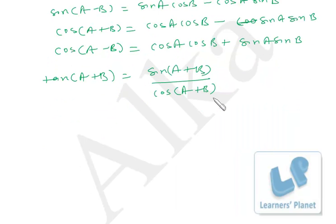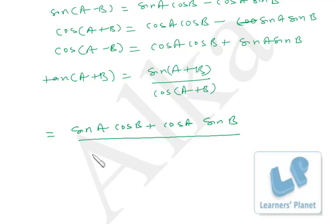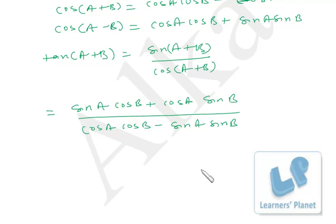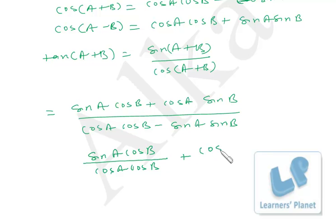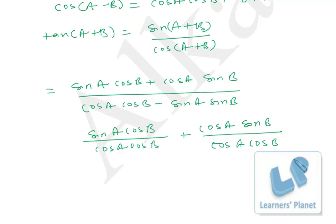So I put up the value: sin A cos B + cos A sin B upon cos A cos B − sin A sin B. Now what we are going to do is divide the numerator and denominator by cos A cos B. So what would happen? Sin A cos B upon cos A cos B plus cos A sin B upon cos A cos B, divided by cos A cos B upon cos A cos B.